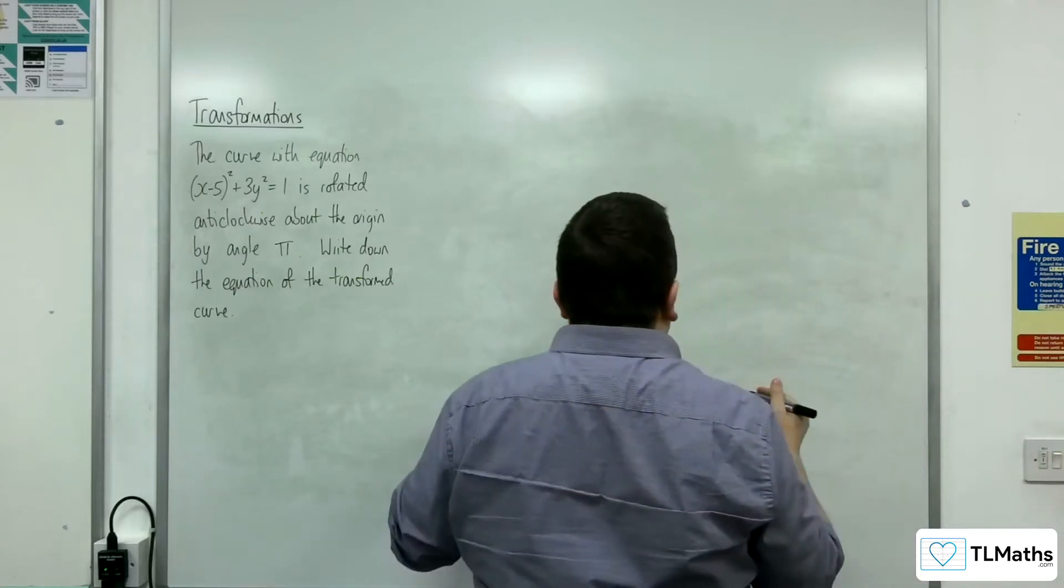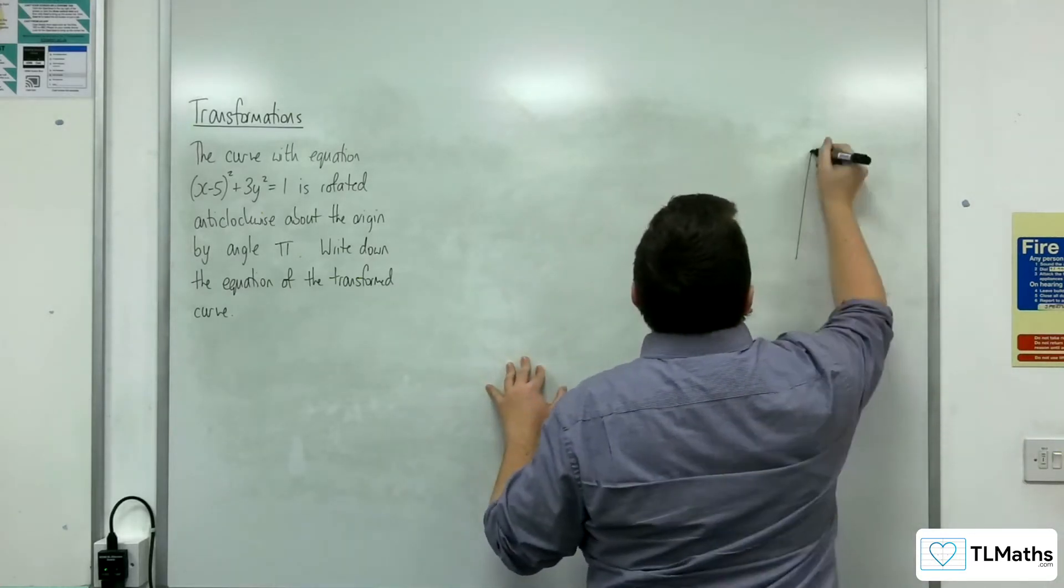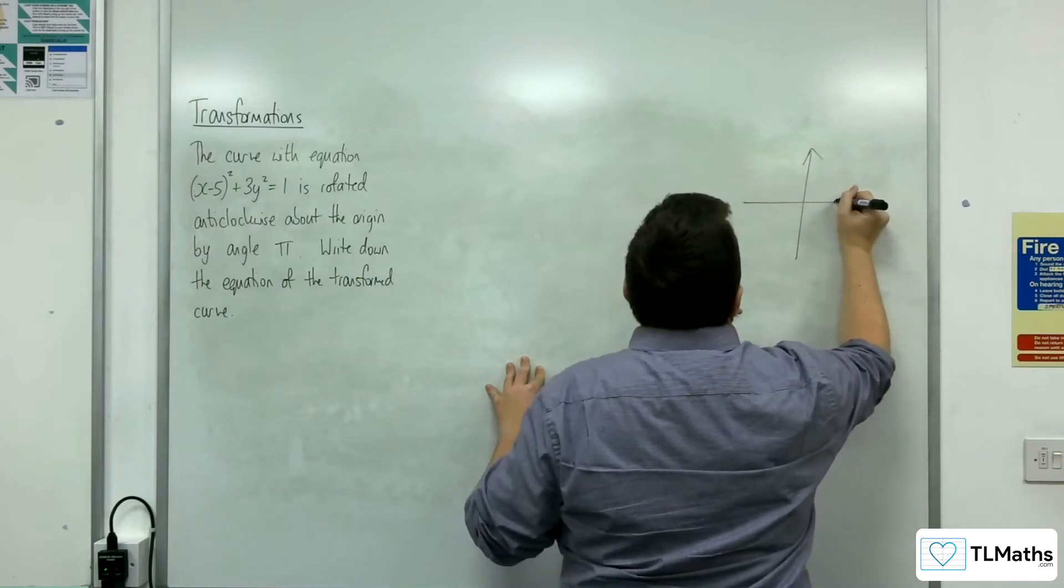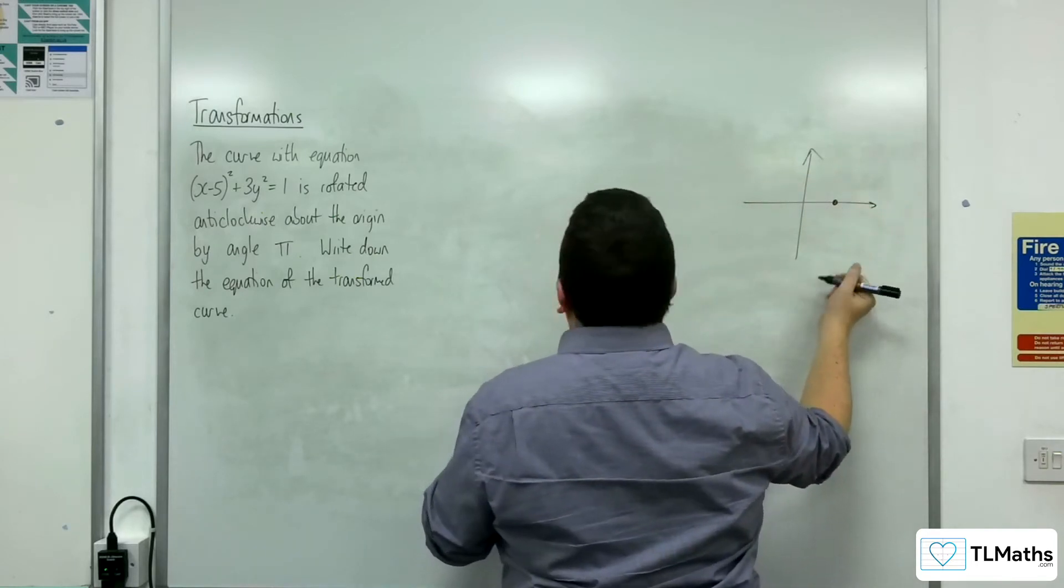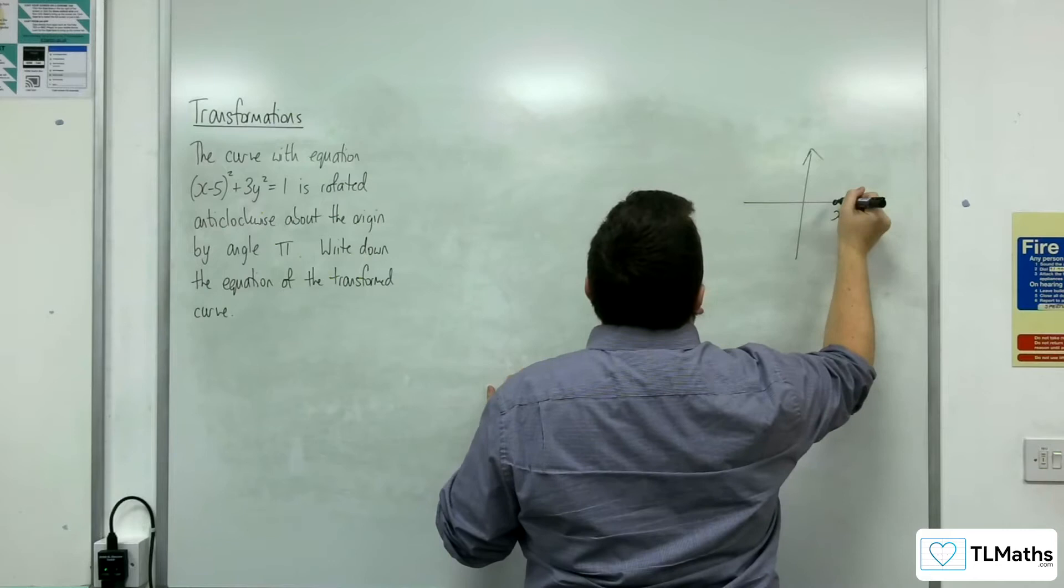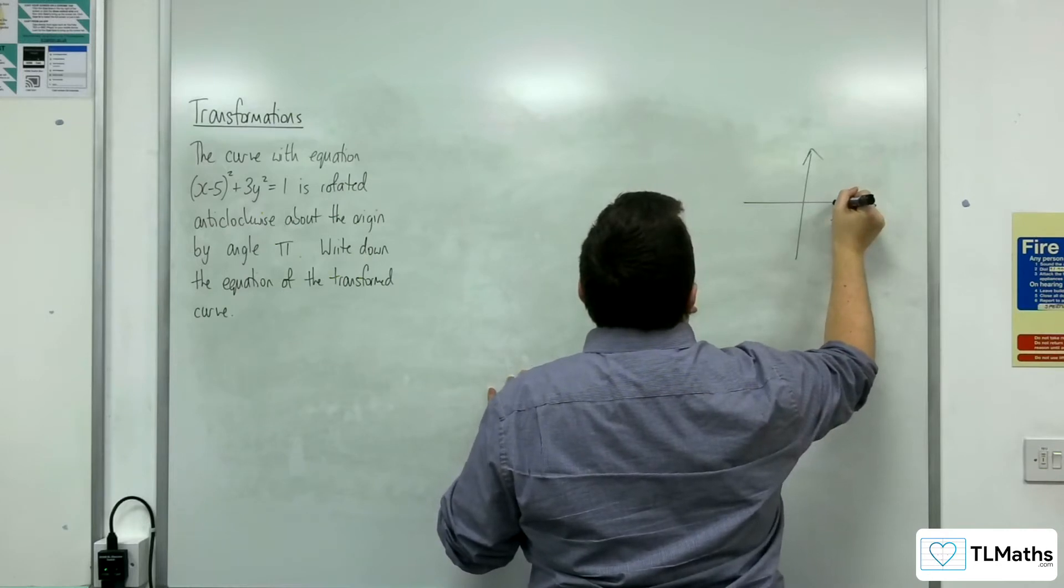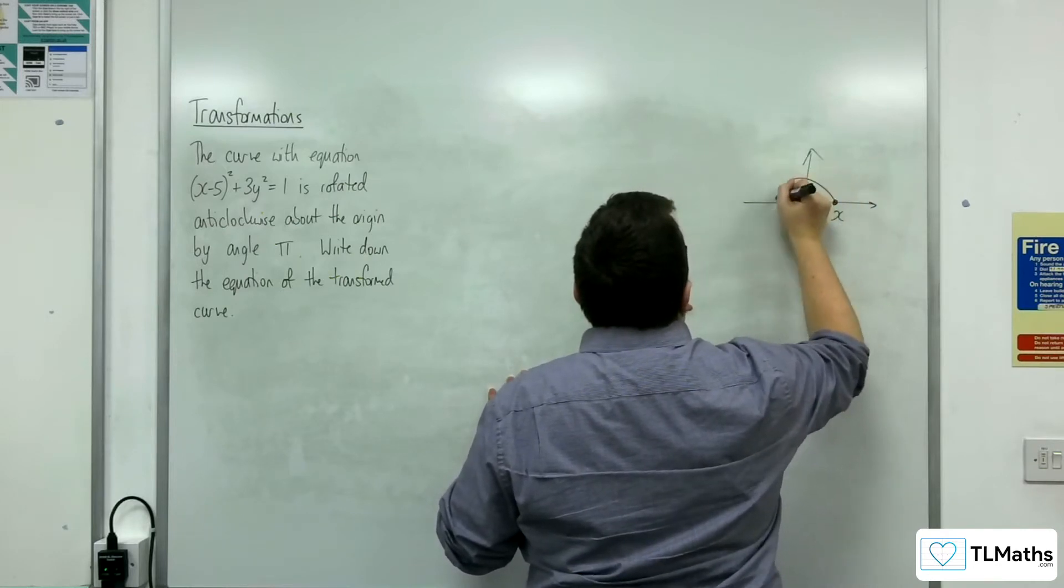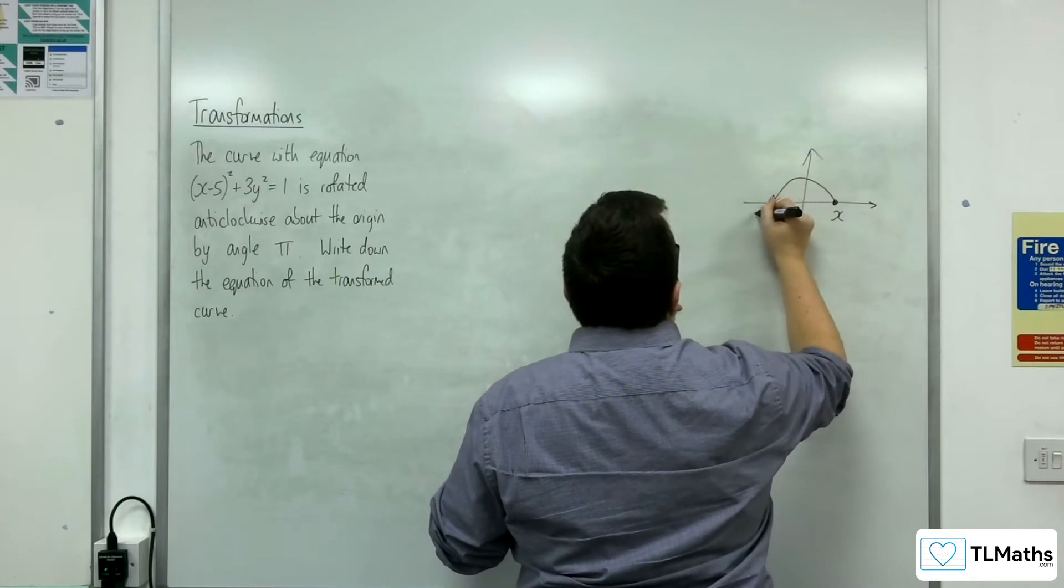Okay, so I'm going to draw a little diagram so that I can recall what is replaced with what. So here's x. If I'm rotating anticlockwise about the origin by angle π, it's going to go over here to -x.